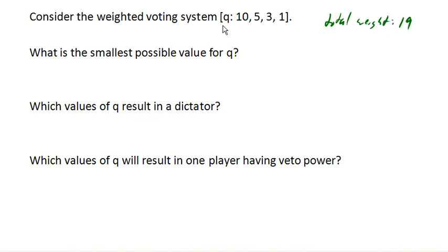But we don't know what the quota is. So our first question is: what is the smallest possible value for the quota? Remember, the quota has to be at least half the total weight. If we take 19 and divide it by 2, we get 9.5. We don't usually use decimal quotas; we always use whole number quotas. So 10 would be the smallest possible value for the quota.